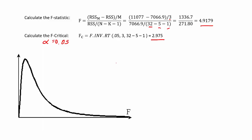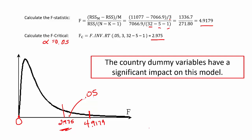Remember that the F-distribution looks like this, where this is 0 and our critical value is somewhere out in the right tail. Our 5% probability cutoff is there, and our value of 4.9179 is further out than that critical value. So we are far enough away to reject the null hypothesis, and we are able to say that the country dummy variables regarding regulatory differences have a significant impact on the price of pharmaceuticals compared to the United States.